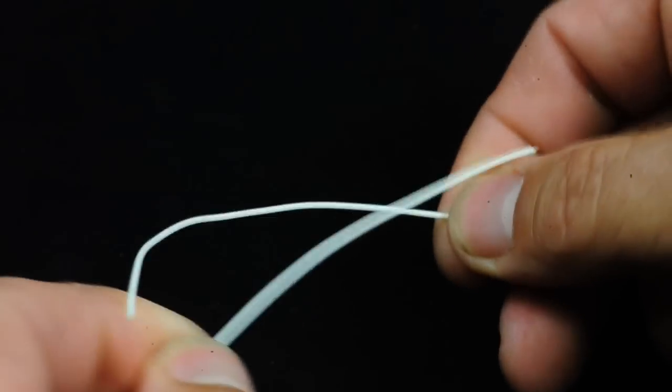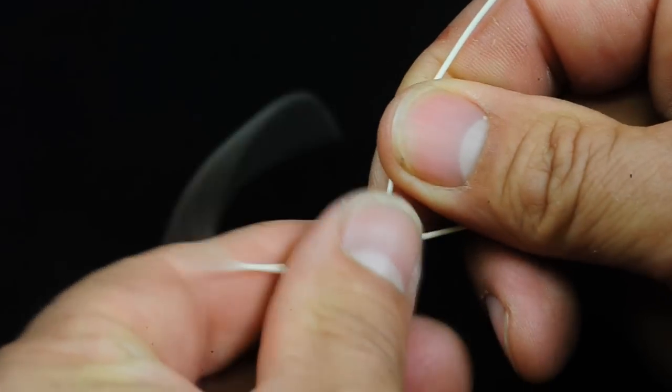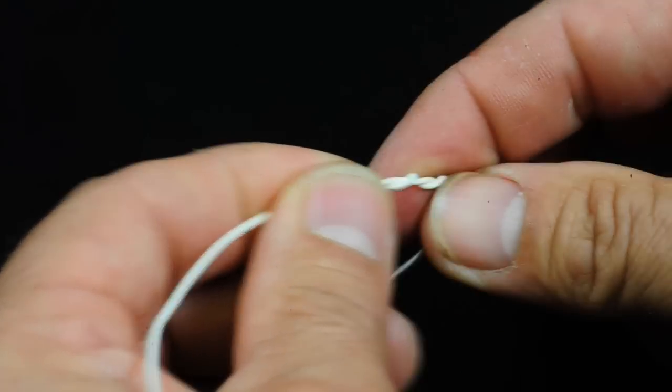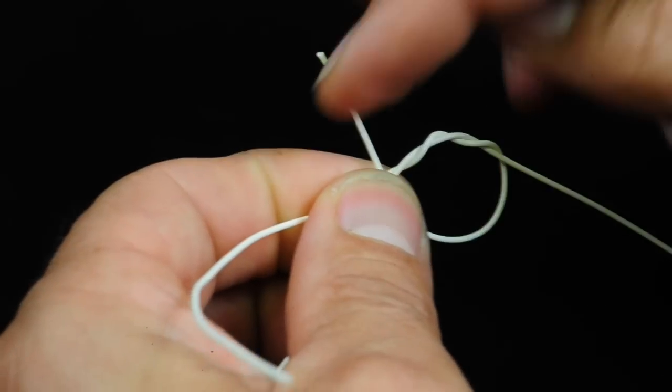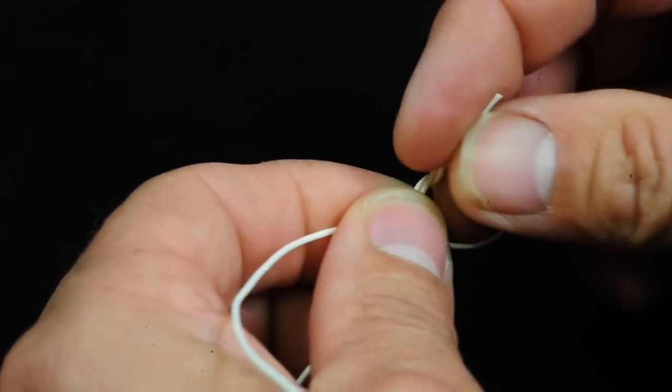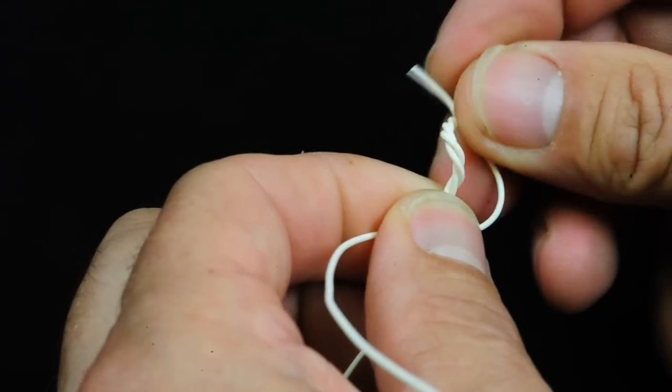Ok, I'll do it like this. Take the 2 ends. Cross them. Do 3 turns: 1, 2, 3. Create a loop. And put the loose end through so it's coming out the same way: 1, 2, 3. 1, 2, 3.